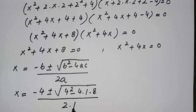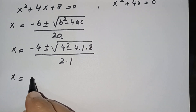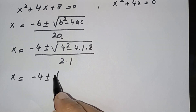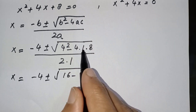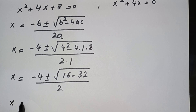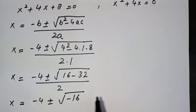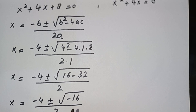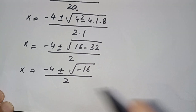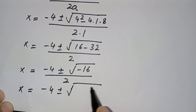In the next step, x = [−4 ± √(16 − 32)] / 2. So x = [−4 ± √(−16)] / 2.